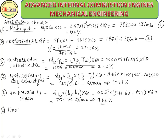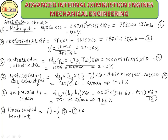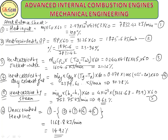The last item is unaccounted heat loss = Heat input − (BP heat + jacket water heat + dry exhaust heat + steam heat) = 1168.8 kJ/min, which is 14.92%. This is the complete heat balance sheet. This numerical is based on the percentage of H₂ given, requiring calculation of heat carried by dry exhaust gas and heat carried by steam. That's it for today, thank you.